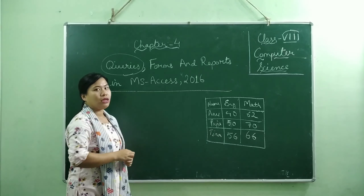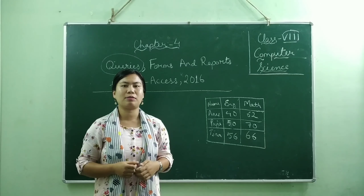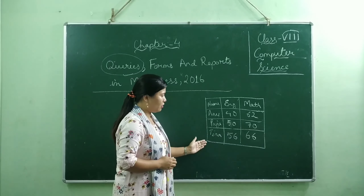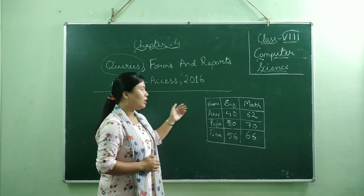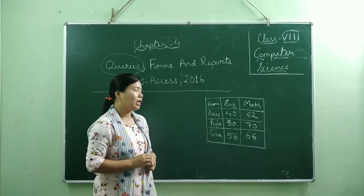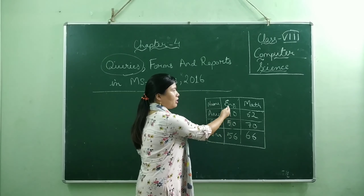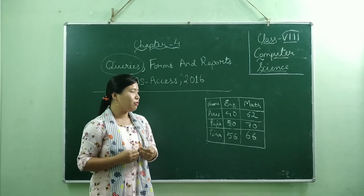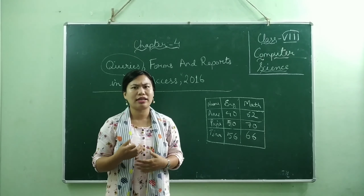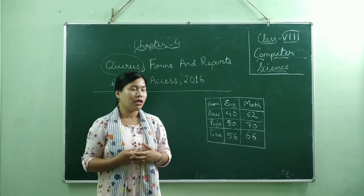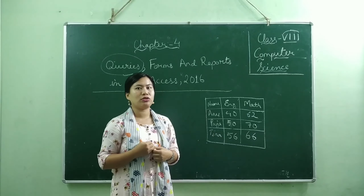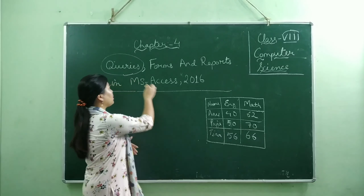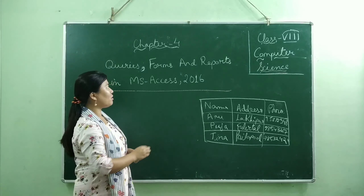First of all, what is a query? Query is a specific record from the table that meets a certain criteria. For example, if you have created a table in MS Access with the names of students and their marks, the query allows you to get the list of students who are getting less than 50 or less than 40 — whatever your criteria or condition might be. To take out that filtered information, you use the feature called query in MS Access.